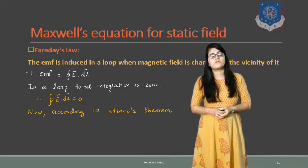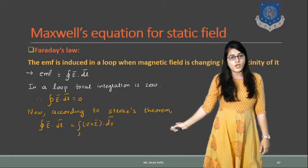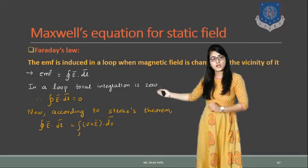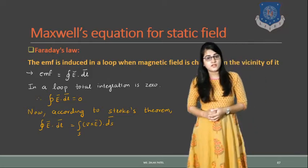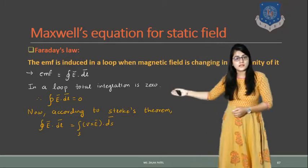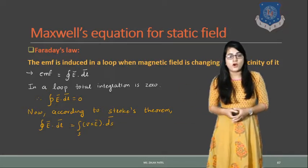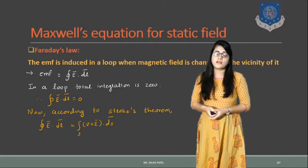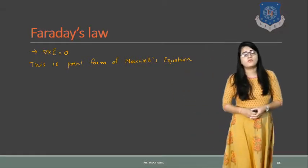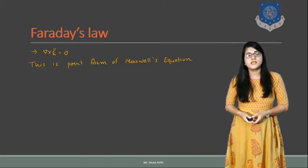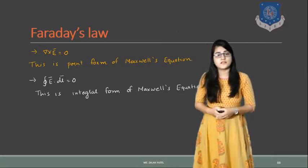For Stokes' theorem, the integration of E dot dL is equal to the surface integration of del cross E dS. Now since the integral of E dot dL is 0, comparing both equations, del cross E dS over the surface becomes 0, so del cross E equals 0. This final equation in point form of Maxwell's equation for the static field is del cross E equals 0, and it is called Faraday's law.